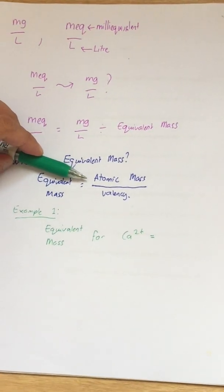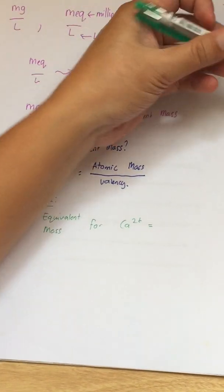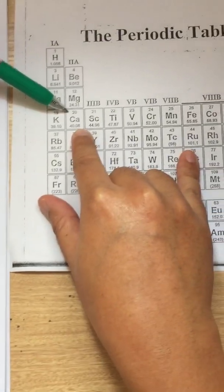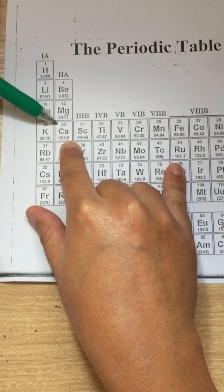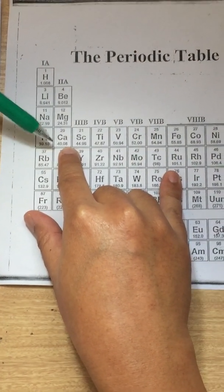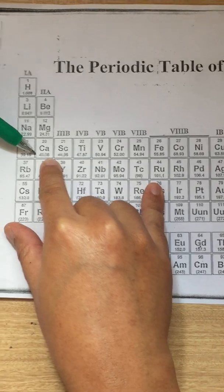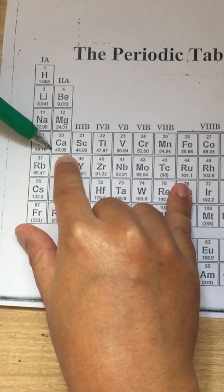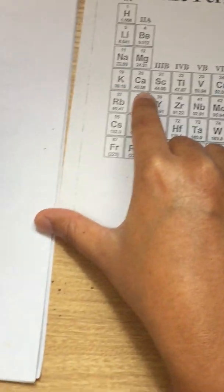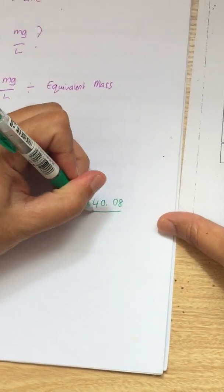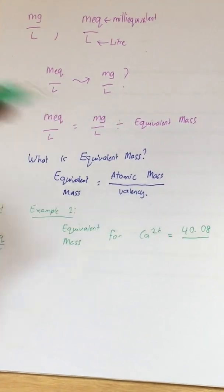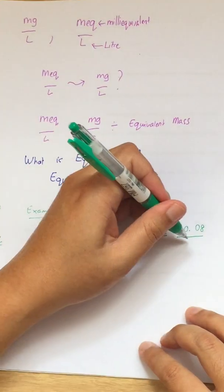If you refer to this periodic table, this is calcium. The top number is the atomic number which we are not interested with. The second one, the bottom number is the atomic mass number and that is 40.08. Therefore that is 40.08 being written here divided by the valency. You can see the valency for calcium is 2 plus.